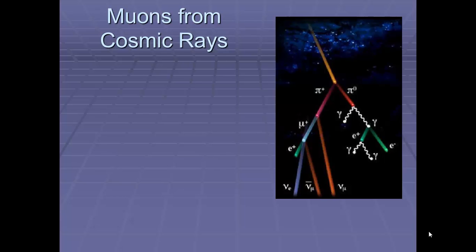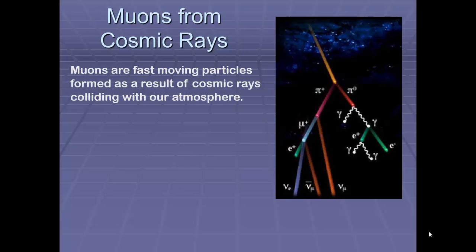Now muons are formed in our atmosphere, the top of our atmosphere, due to collisions with high-energy cosmic rays which come from outer space. These high-energy cosmic rays interact with particles in our atmosphere and there's a number of chain reactions and eventually something which is called a muon is produced. And muons are fast-moving particles formed as a result of these cosmic rays colliding with our atmosphere.